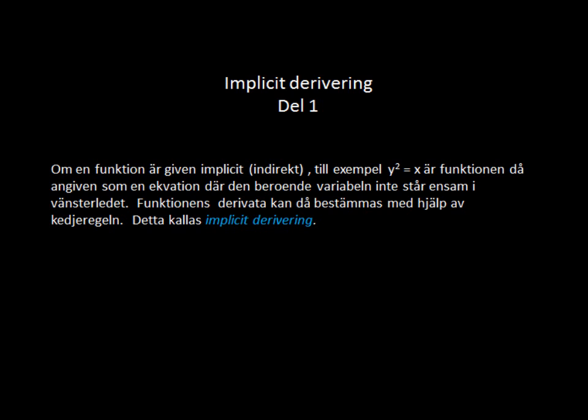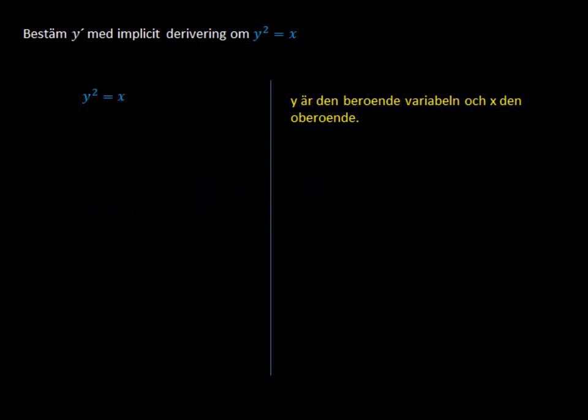So let's go ahead and take a look at what we have here. Let's go ahead and do the y squared equals x. We see that y is the dependent variable and x is the one that is the independent.